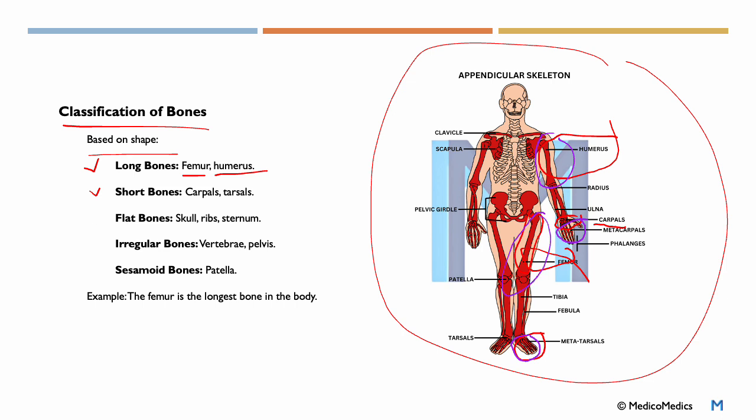Then we have flat bones like the skull, ribs, and sternum. We have our ribs right here, the sternum right here in the middle, and the skull here. Irregular bones like the vertebrae and the pelvis. Sesamoid bones like the patella, seen here. And just so you know, the femur is the longest bone in the body.